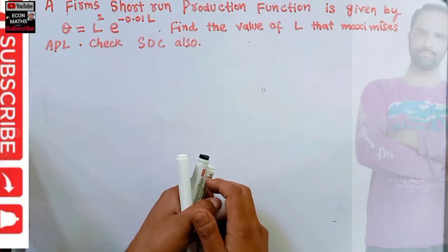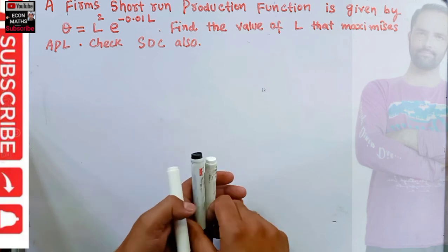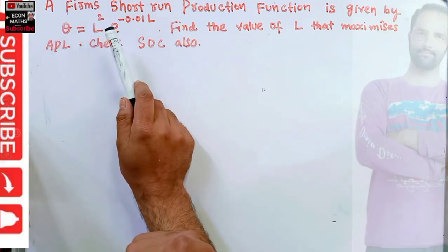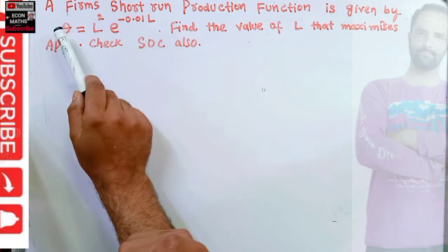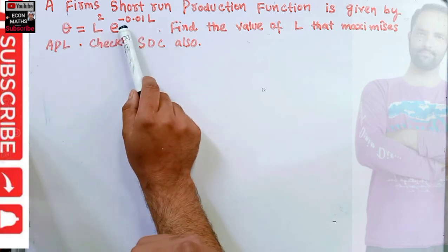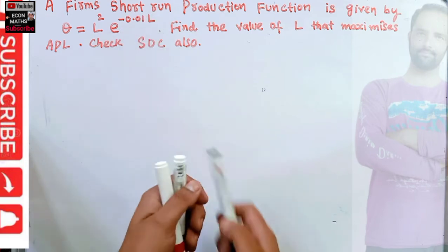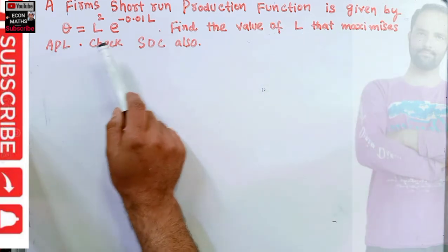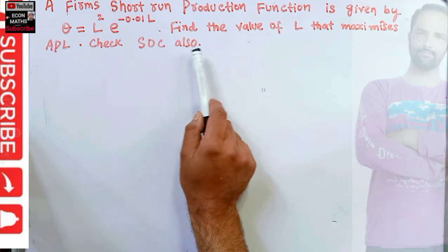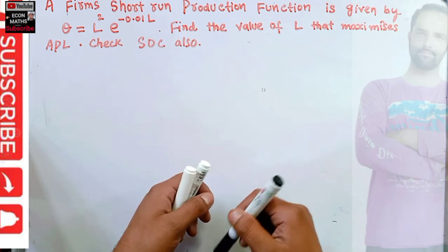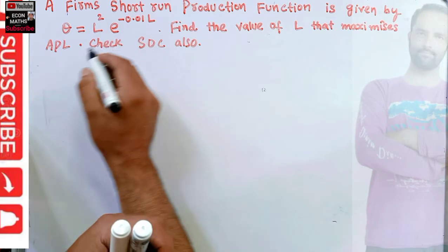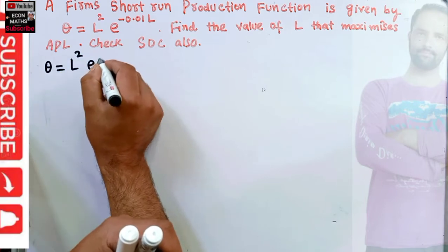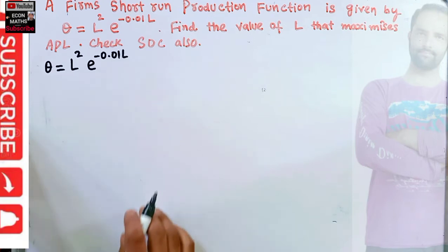In this video we will solve a problem on production function. This question was asked on the Telegram channel of Econ Maths. The question is: a firm's short-run production function is given by Q equals L squared times e to the power minus 0.01L, where Q is output, L denotes units of labor, and e is the exponential function.